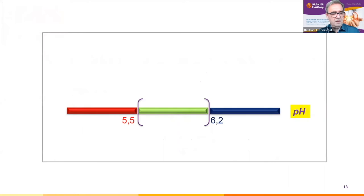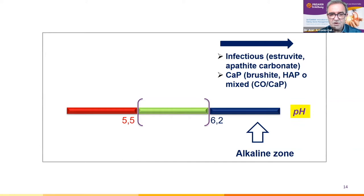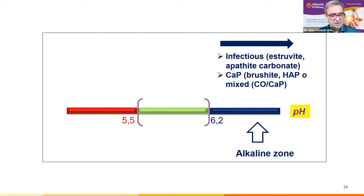Urinary pH is a key factor for stone formation. It is well known that calcium phosphate supersaturation quickly increases at pH over 6, and the prevalence of calcium phosphate stones is on the rise nowadays. One of the conditions favoring its formation is the combination of hypercalciuria, hypocitraturia, and alkaline urine. Some patients present with renal tubular acidosis featuring hyperchloremic acidosis, hypocitraturia, and alkaline urine.